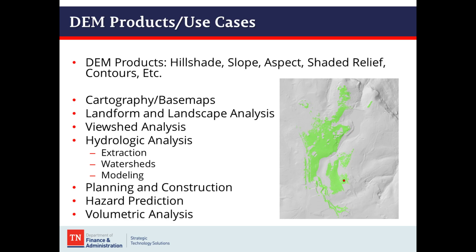DEM products include hillshade, slope, aspect, shaded relief, and you can also generate contours from the elevation models. Use cases include cartography, base maps, landform and landscape analysis, viewshed analysis — where you pick an XYZ location and have the software output what pixels you can see from that location, as shown on the right on a hillshade DEM. You can also do hydrologic analysis, watershed extraction, hydrologic modeling, planning and construction, hazard prediction, and volumetric analysis.